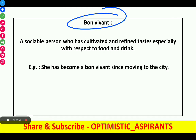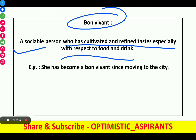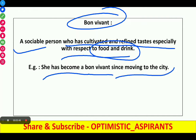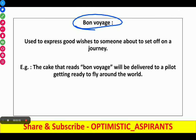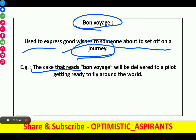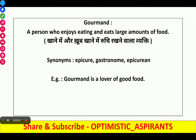Next word is bon vivant. It is a sociable person who has cultivated and refined taste, especially with respect to food and drink. Example: 'She has become a bon vivant since moving to the city.' Next is bon voyage, used to express good wishes to someone about to set off on a journey. Example: 'The cake that says bon voyage will be delivered to a pilot getting ready to fly around the world.'